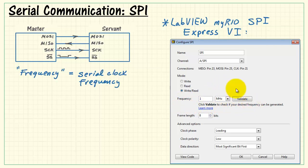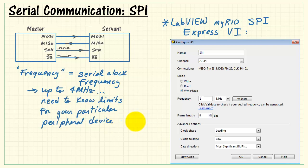Frequency specifies the frequency of the serial clock. Notice that you can span the range of hertz all the way up to megahertz, and you can select a wide range of values. Simply press the validate button to make certain that your particular frequency is supported. You can go all the way up to four megahertz, and you just need to know the limits of operation for your particular peripheral device.